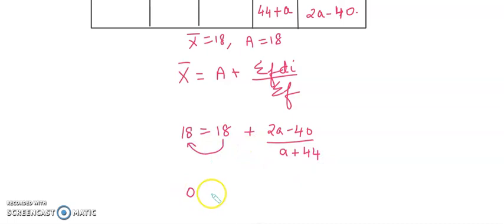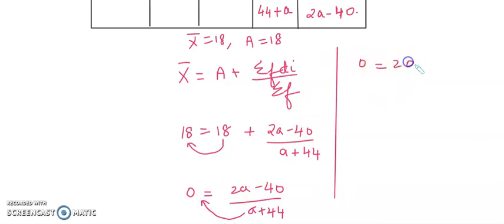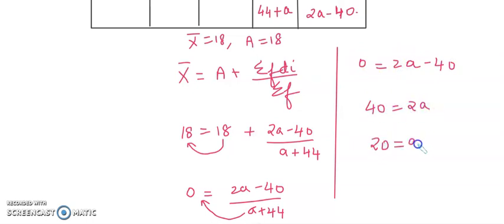18 minus 18 is 0, so 0 equals 2a minus 40 upon a plus 44. Shifting a plus 44 to the other side gives 0 equals 2a minus 40. Shifting the 40 to the other side: 2a equals 40, so a equals 20.